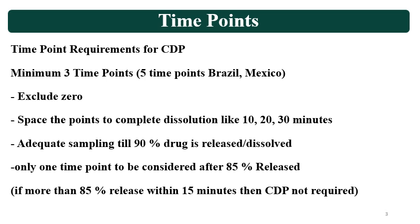Adequate sampling should be there till 90% drug is released or dissolved. Only one time point should be considered after 85% drug is released or dissolved. The basic reason is that if you consider more than one time point after 85% release, there are chances that you are artificially matching the dissolution. Because after 85% release the dissolution will become similar, so only one time point should be considered after 85% is released — more than 85% release is generally considered as complete release.